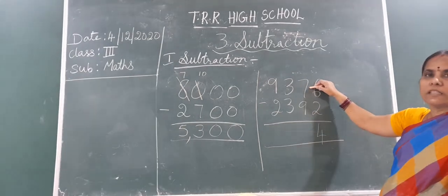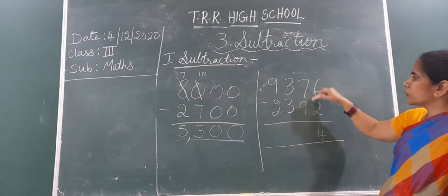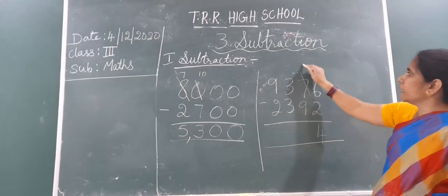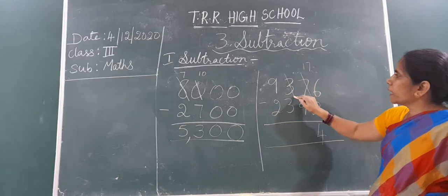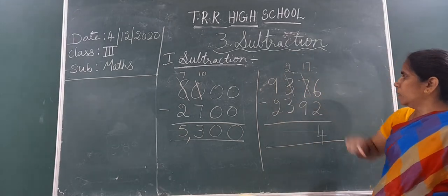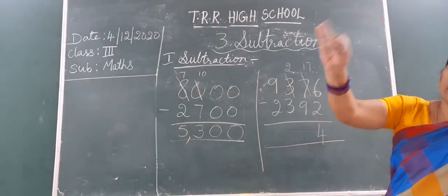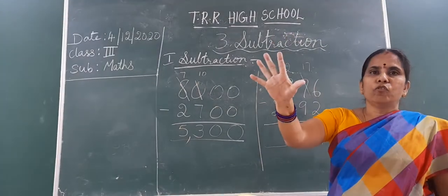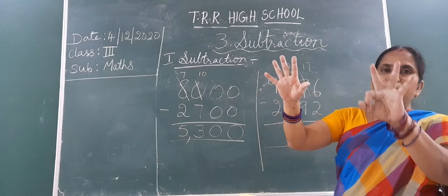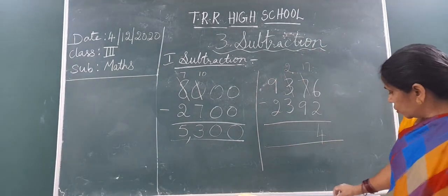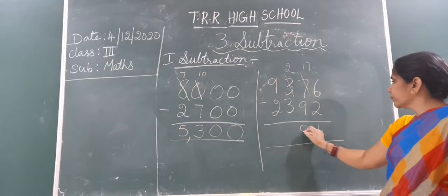Now, go to the tens place. Here 7 is there. 7 is smaller than 9. So, what you must do? You must say borrow. 7 cut and write 17. Immediately 3 cut and write 2. Again close fingers. 9 after 10, 11, 12, 13, 14, 15, 16 and 17. How many fingers you open? 8 fingers. So, write 8 in the tens place.